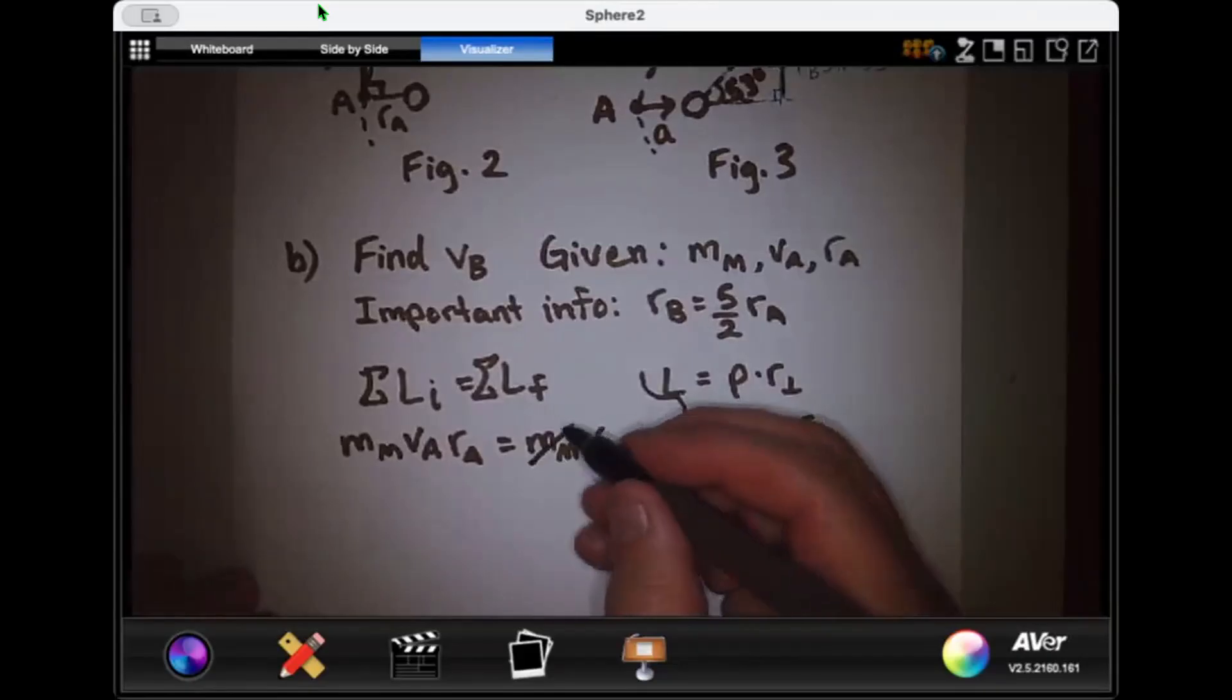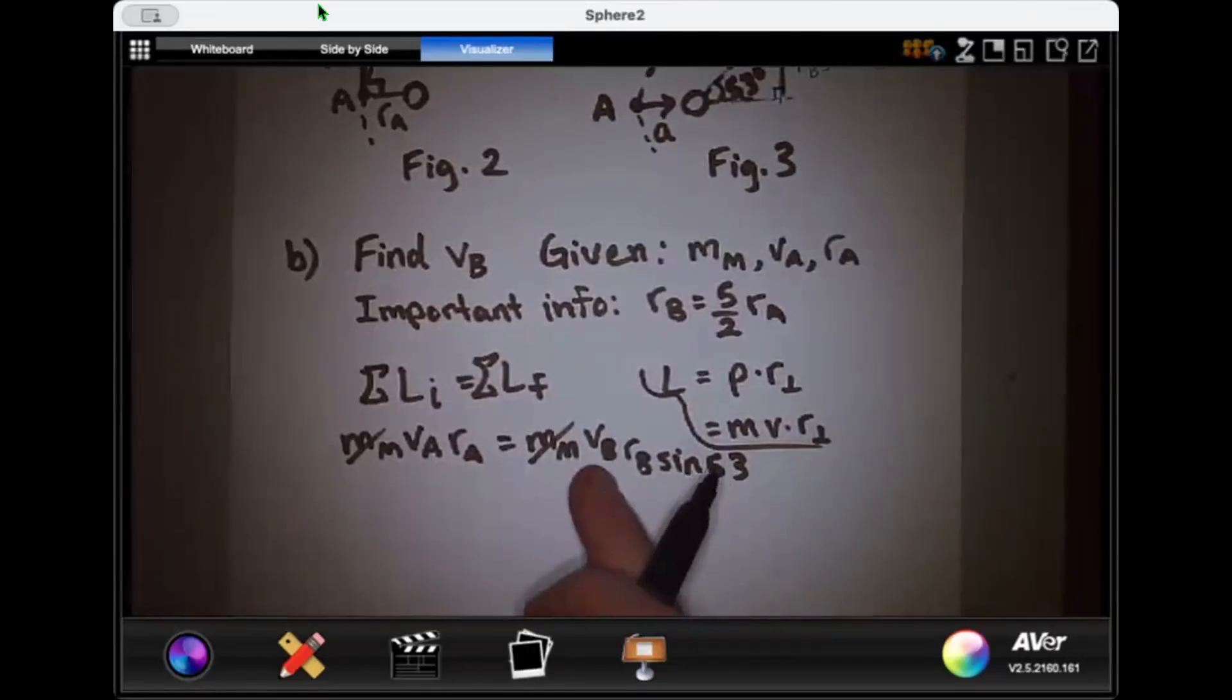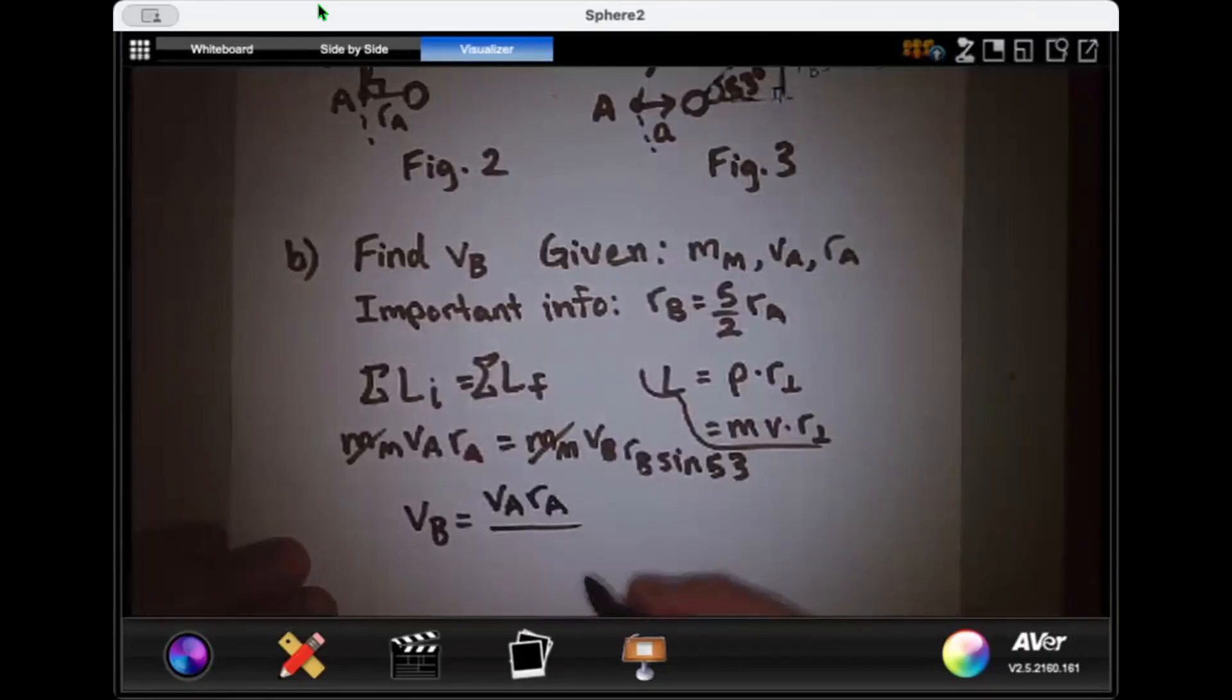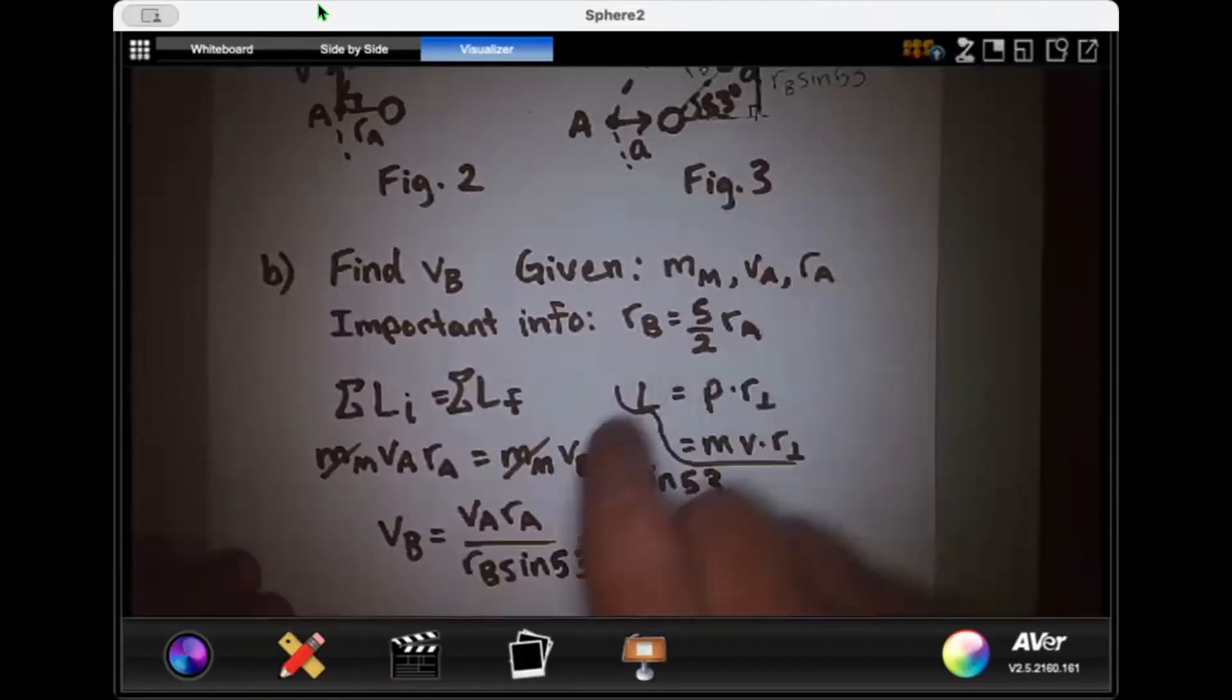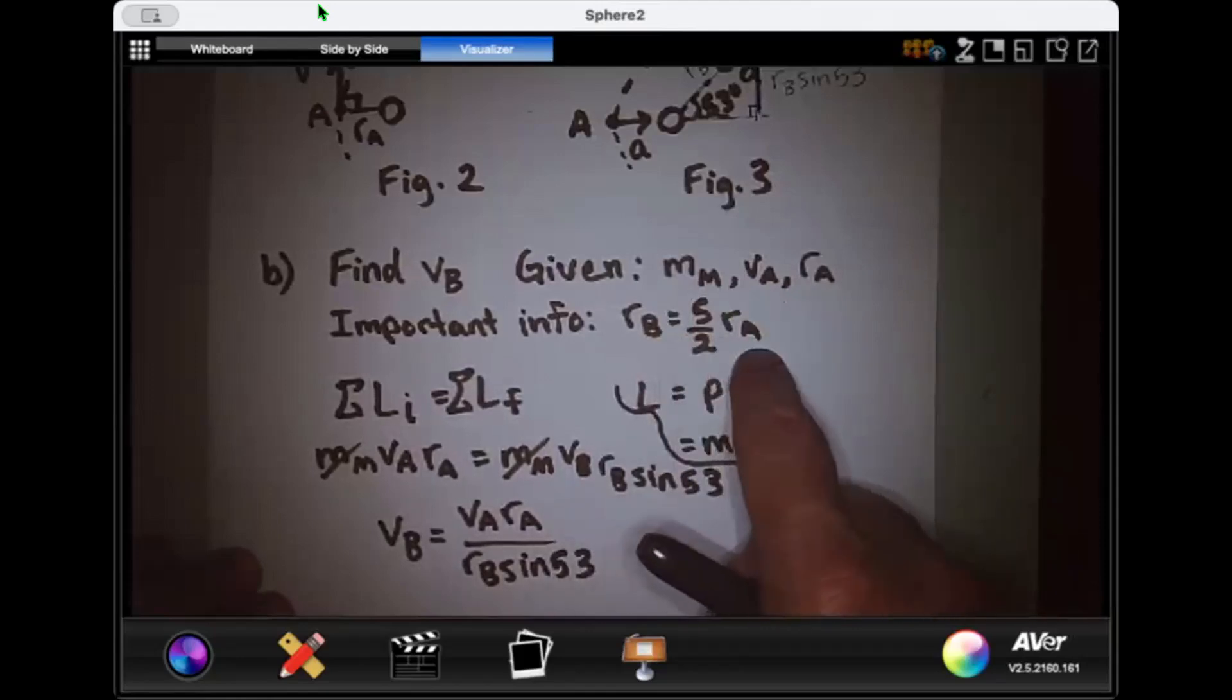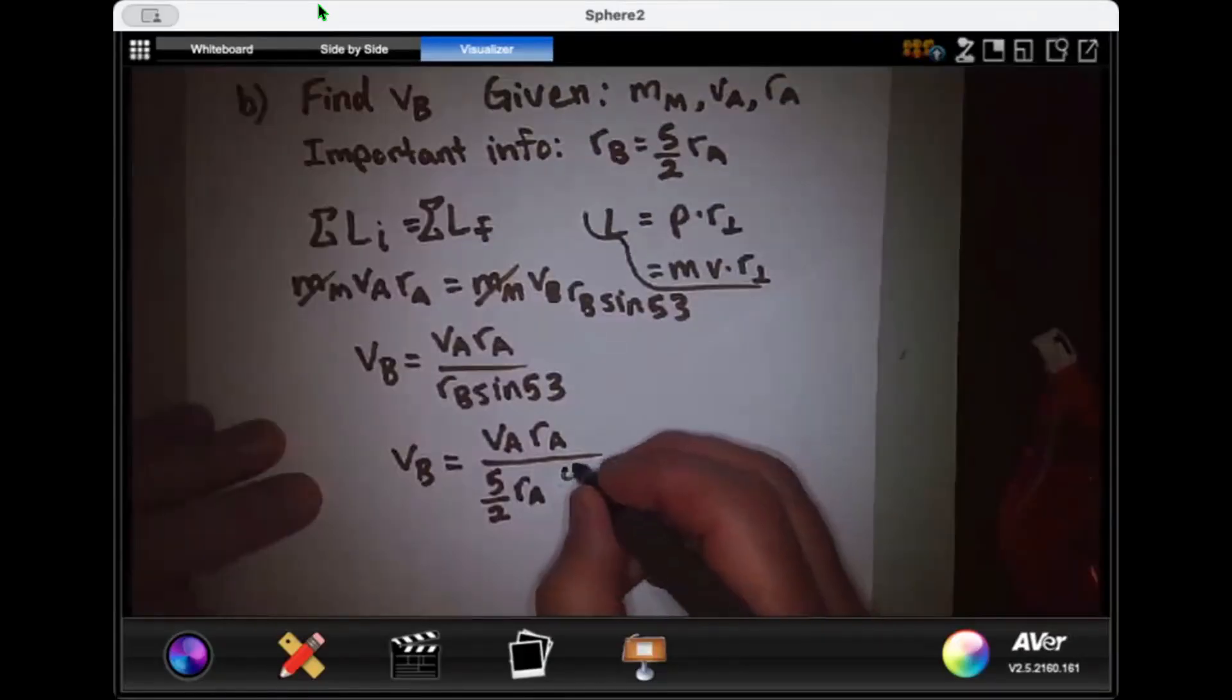Now, what do we have on both sides? Well, we've got the mass of the moon on both sides. Let's cross it out. And let's solve for the thing we're looking for, which is VB. VB would be equal to VA times RA all over RB sine 53. And we're so close. But if you look at our given list, we have VA, we have RA, but RB is not one of our givens, but RB is equal to this amount of RA. So let's plug that in for RB. I will get VB equals VA RA all over 5 halves RA times 4 fifths.